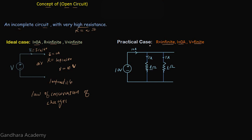To understand this point in more detail, let's take an example in which we have a voltage source of 10 volts with 10 amperes of current flowing from this source. This source is connected with two resistors in parallel, each having a resistance of 1 ohm, so 5 amperes of current flows through each resistor.